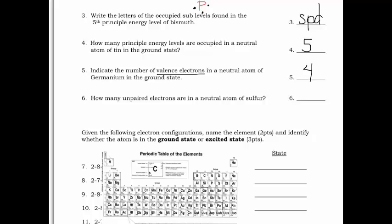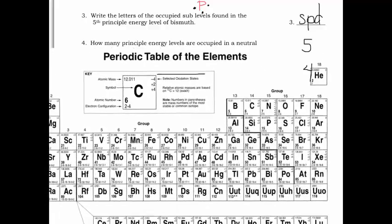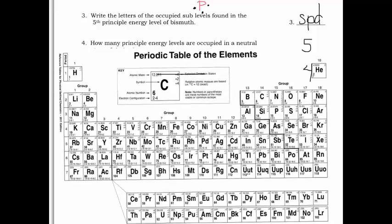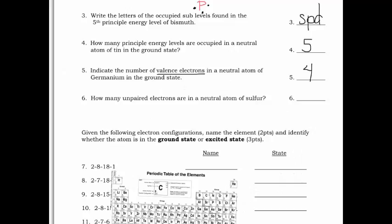Number six: how many unpaired electrons are in a neutral atom of sulfur? We can use a dot diagram as long as it's not in those transition metal groups. Sulfur is right here — it's not in that section or the lower section — so we can figure it out with just a dot diagram. The valence number is six. Drawing it out: one, two, three, four, five, six. Our unpaired electrons are two.